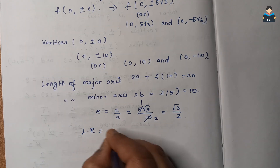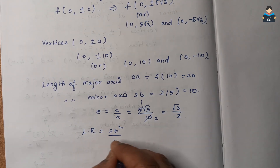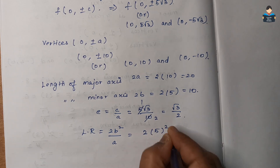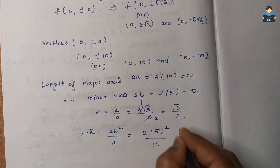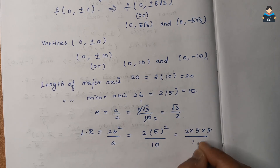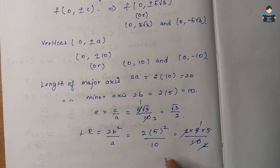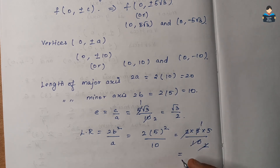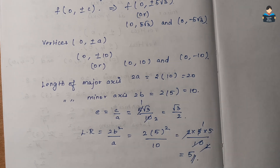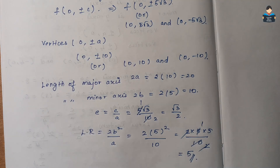Latus rectum = 2b²/a = 2 × 25 / 10 = 50/10 = 5. So the latus rectum value is 5. That completes Question 4. Next is Question 5.